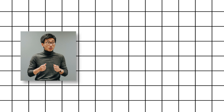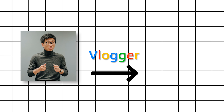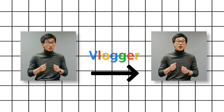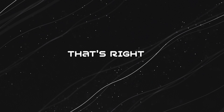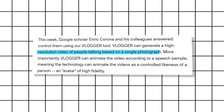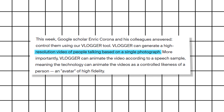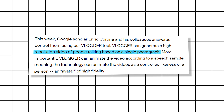Imagine this: you have a single picture of someone. With Vlogger, you can use that picture to create a whole video of that person talking and moving. Vlogger takes a single image and breathes life into it using text and audio.